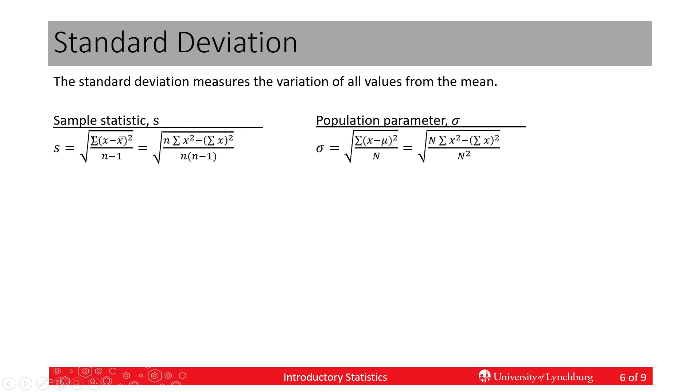All of these values in the numerator are positive. We add up a bunch of positive numbers and divide by n minus 1. So under the square root we're always going to have a positive number. If you don't get that, you've made a mistake.